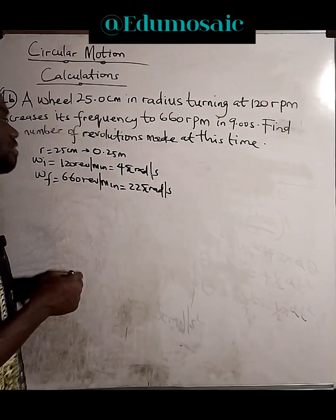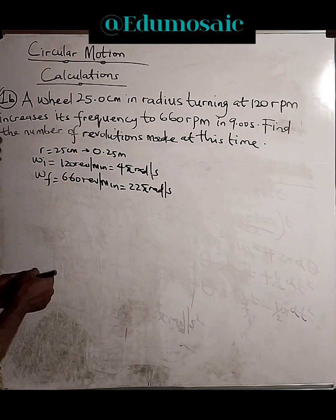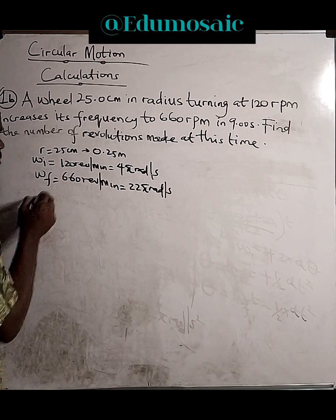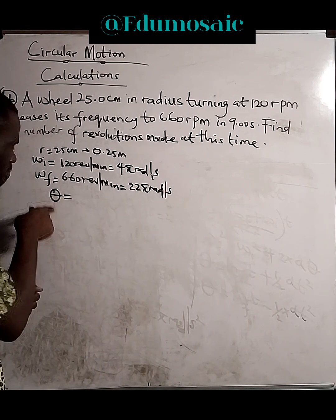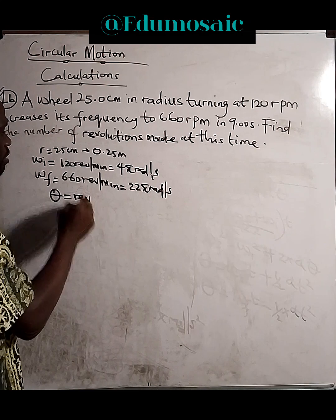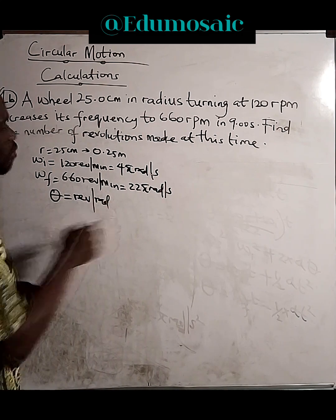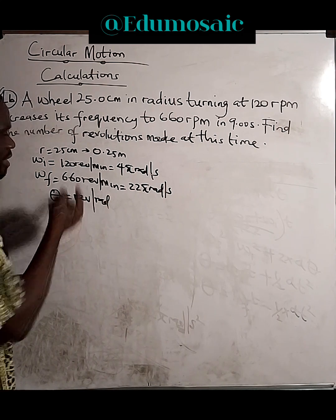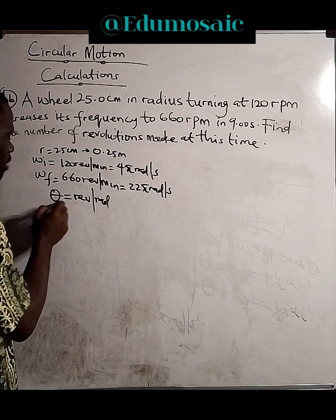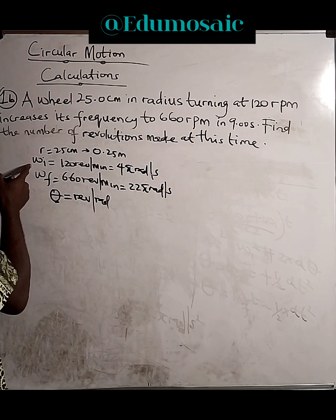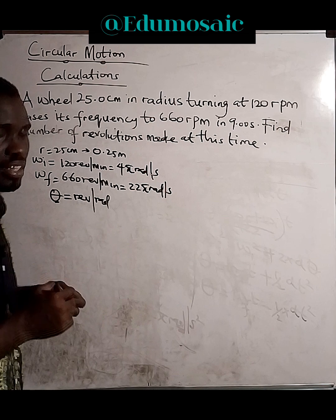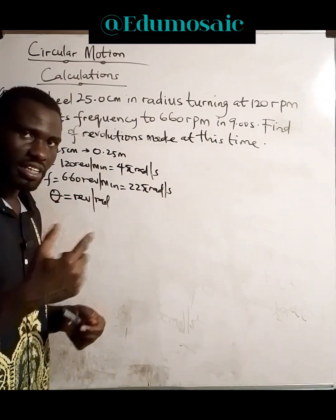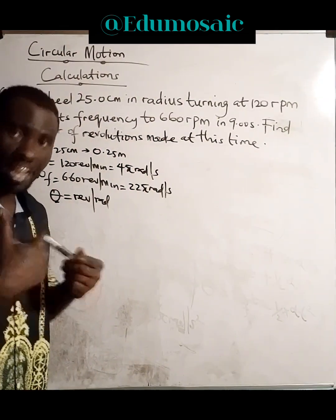So, today we are asked to get the number of revolutions. The number of revolutions is simply the angular displacement. Don't forget, the angular speed could be in revolution or radians. So, how do we get this number of revolutions? We're going to be looking for this angular displacement, which is more or less like the S, which is the linear distance for linear quantities.